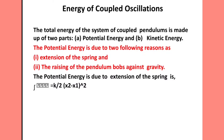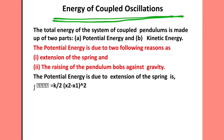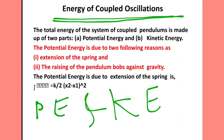Energy of coupled oscillations. The total energy of the system of coupled pendulums is made up of two parts: first, potential energy, and second, kinetic energy. The potential energy is due to two reasons: number one, extension of the spring in the coupling, and second, raising of pendulum bobs against gravity.